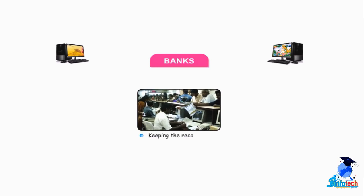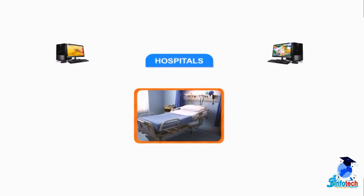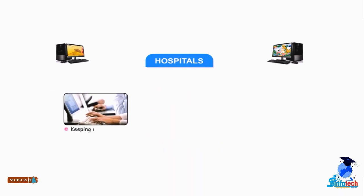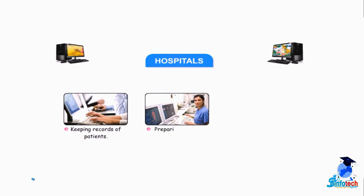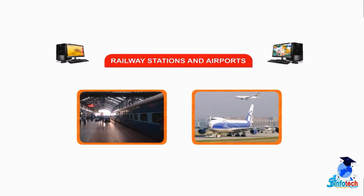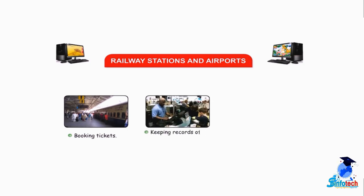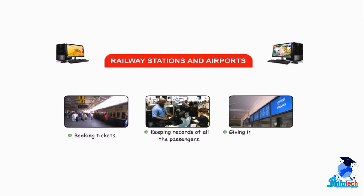In banks, computers are used for keeping records. In hospitals, computers are used for keeping records of patients, preparing medical reports and X-rays, and knowing more about diseases and their causes. At railway stations and airports, computers help in booking tickets, keeping records of all passengers, and giving information about arrival and departure timings.